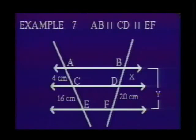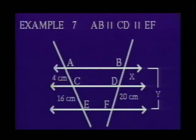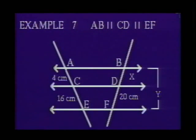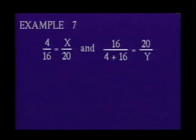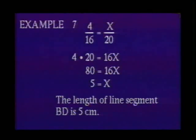Line segment AC measures 4 centimeters, line segment CE measures 16 centimeters, and line segment DF measures 20 centimeters. Given this information we can find the measures of line segments BD and BF, which we will call X and Y respectively. Since three or more parallel lines divide two transversals proportionately, we write: 4 is to 16 as X is to 20, and 16 is to 20 as 20 is to Y. Solving the first proportion, X = 5. Thus the length of line segment BF is 25 centimeters.